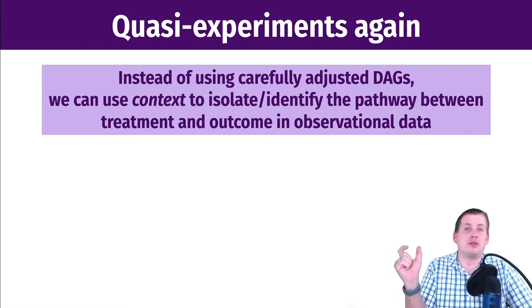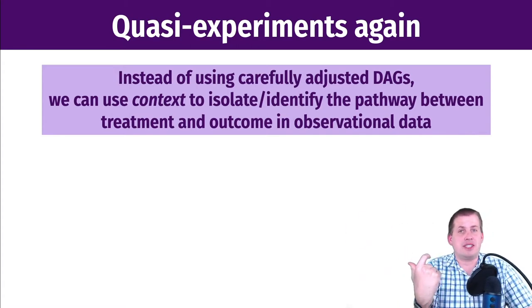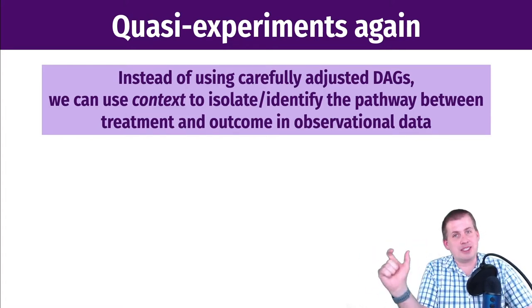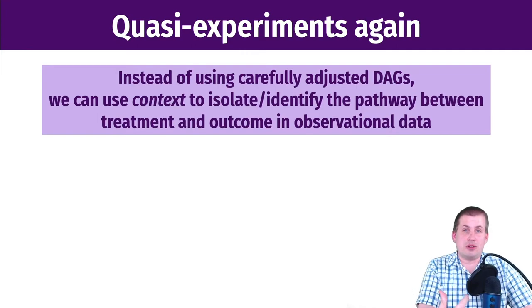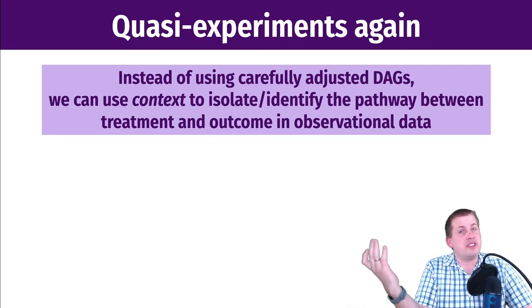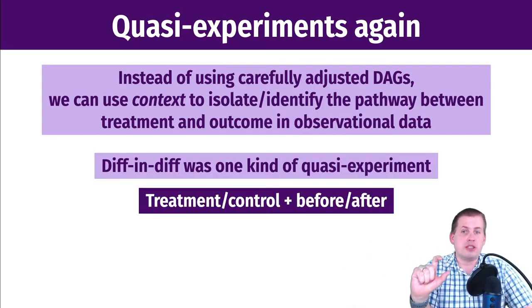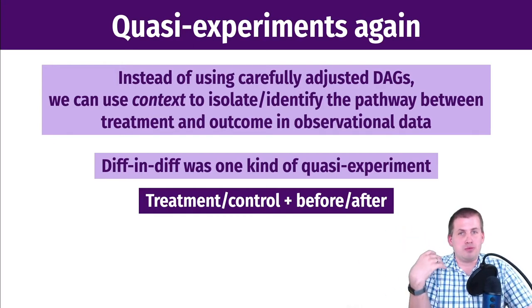With quasi-experiments, the idea is that we use the context or story behind some situation we see in the world to get around unobserved confounders or unobserved variation. The context — the story behind the situation — is what assigns treatment and control, which essentially isolates that pathway without needing inverse probability weighting or matching. With diff-in-diff, you have a treatment group, a control group, a before, and an after.